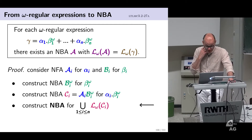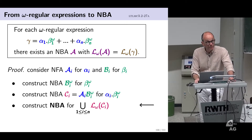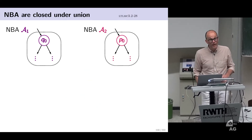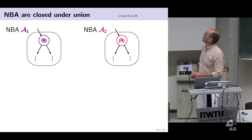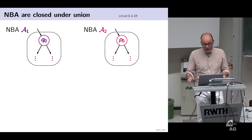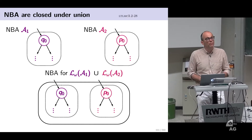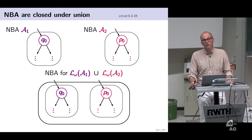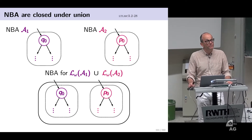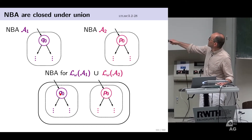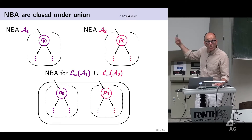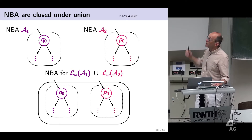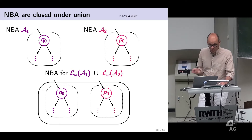The NBA for the union is straightforward: given two NBAs A1 and A2, just combine them into one automaton with all their states, transitions, and initial/accepting states. You can either start in A1's initial states — accepting any word A1 accepts — or start in A2's initial states — accepting any word A2 accepts.